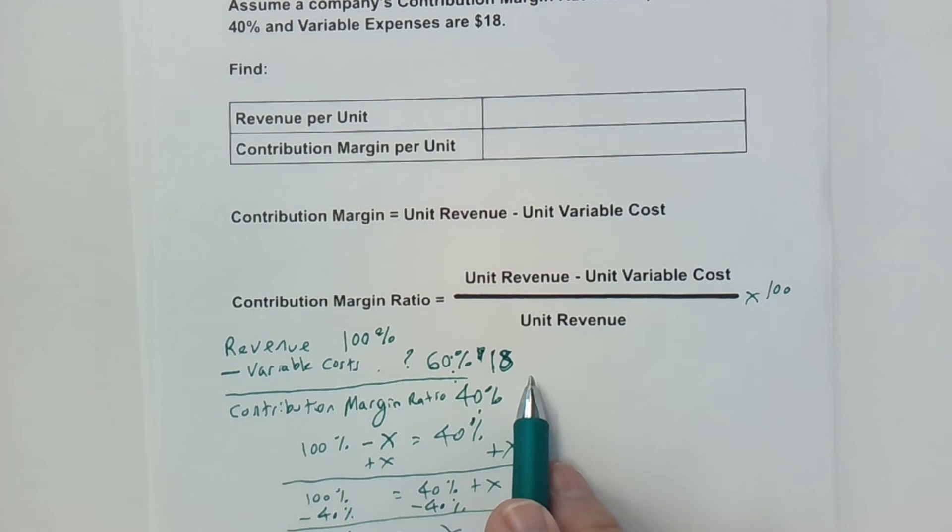So we've got $18 here, and that represents the 60%. So how can we find out how much the dollar figures are for these two items, the 40% and the 100%?